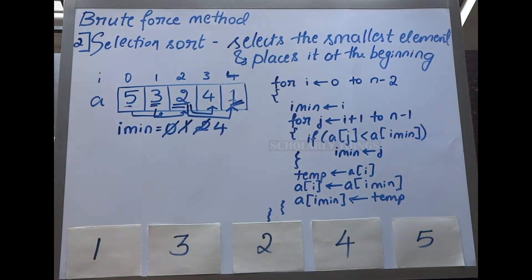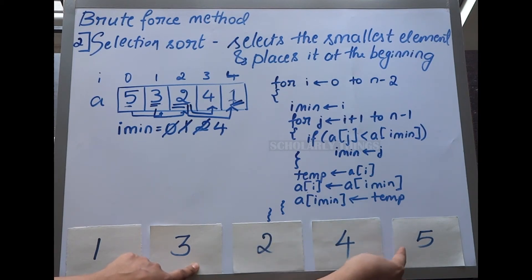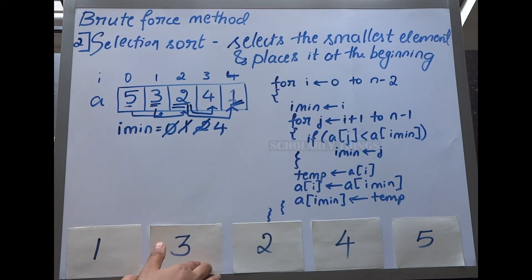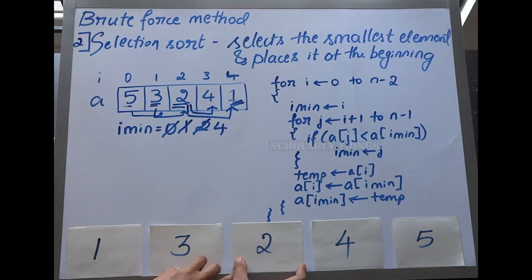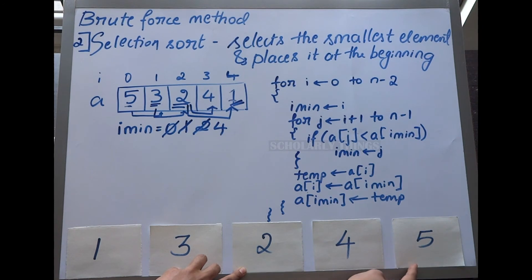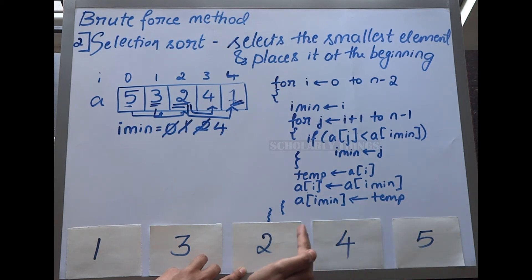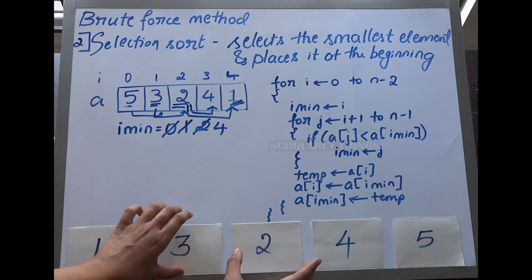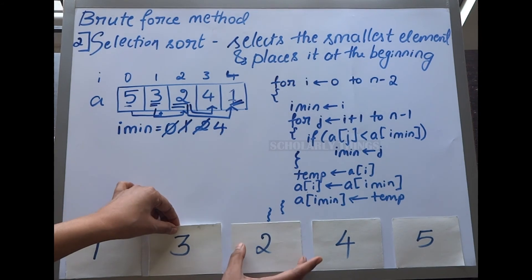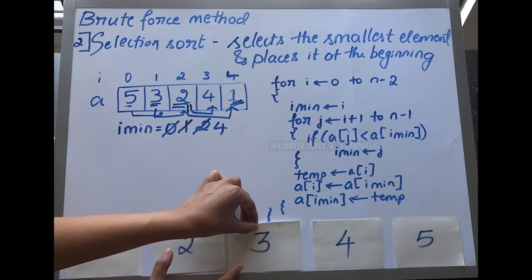In the next iteration, we start with element 3 and find the minimum value in the unsorted portion. We compare 3 with 2 — since 2 is less than 3, 2 becomes the new minimum. Then 2 is compared with 4 and 5, neither of which is less, so 2 remains the minimum. By the end of the iteration, 2 is swapped with the starting element 3.